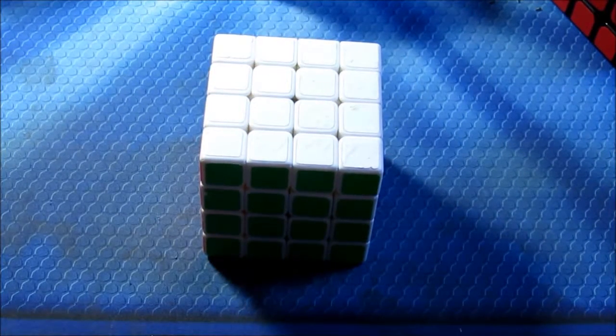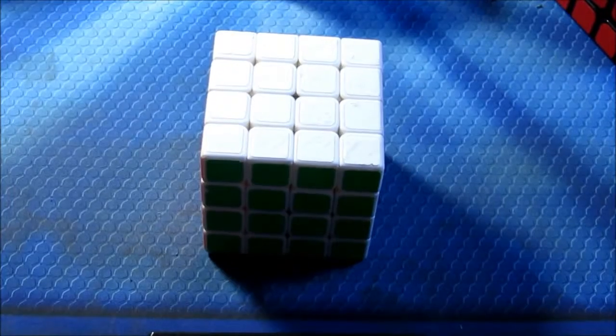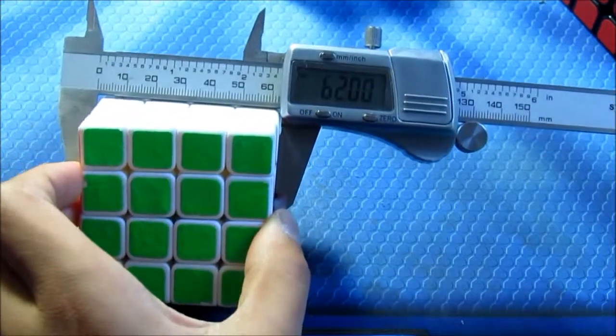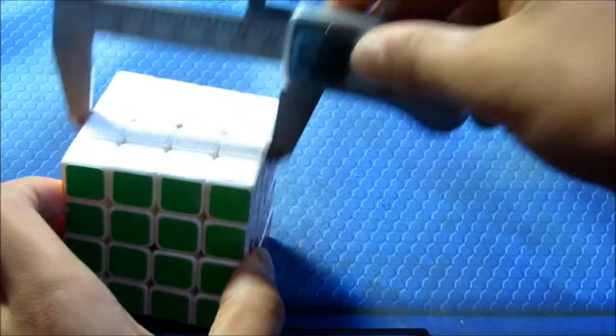Hey guys, today I have a review of the Moyu Aosu 4x4. The Moyu Aosu is 62mm on each side, which is a pretty nice size for a 4x4.